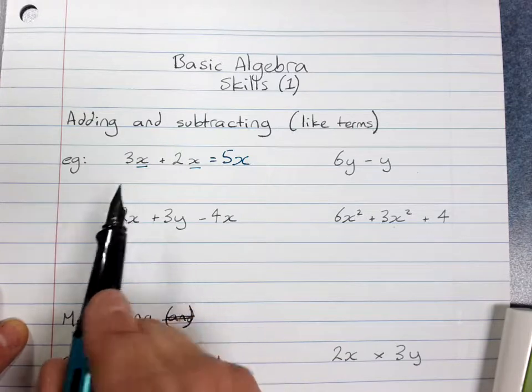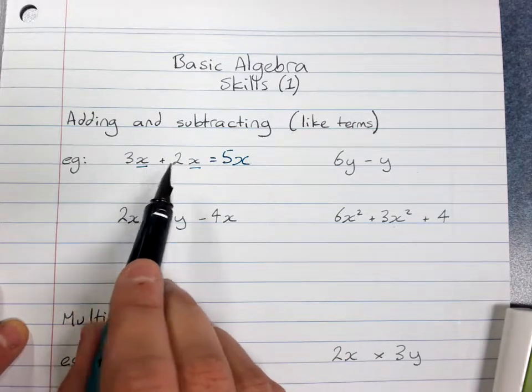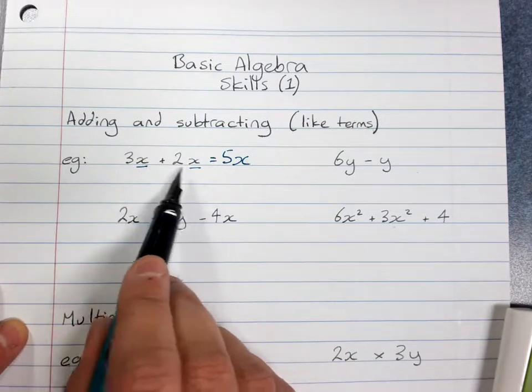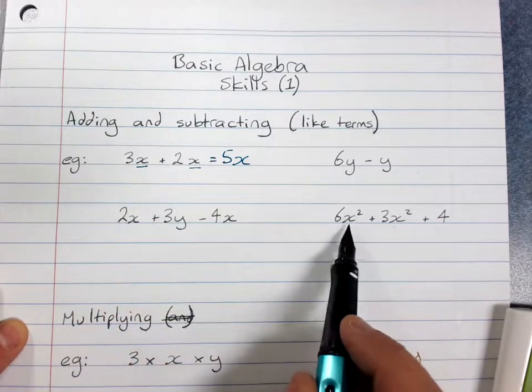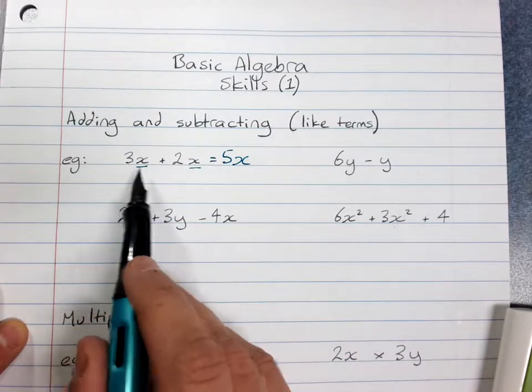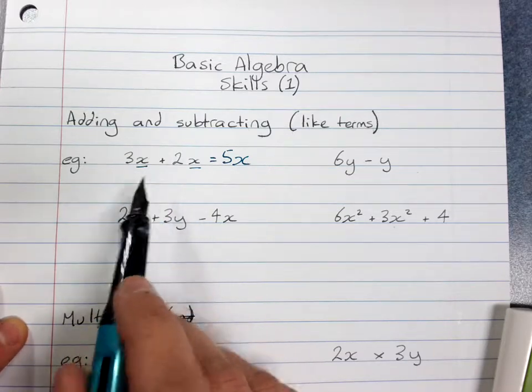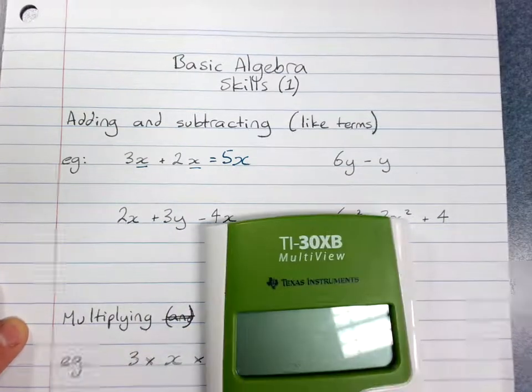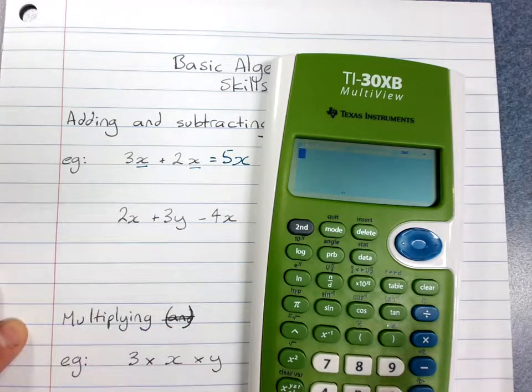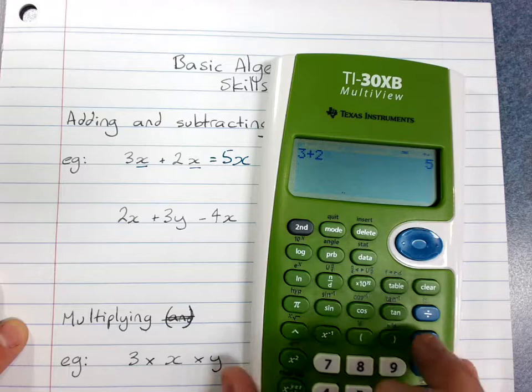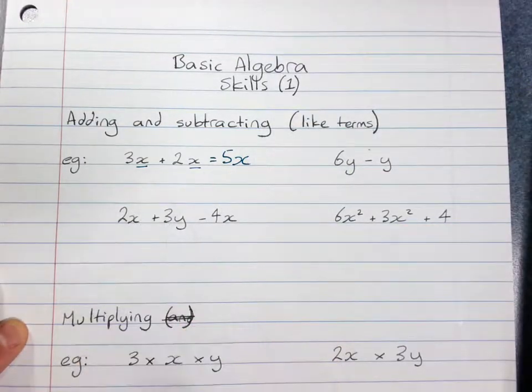So the thing is, when you're adding or subtracting like terms, that is, it's the same pronumeral with the same powers, all you do is add or subtract the number in front, the coefficient. And if you need to use your calculator, then you say, I know this is going to be 3 plus 2, which is 5, so I've got 5 lots of x.